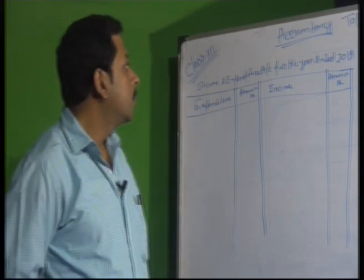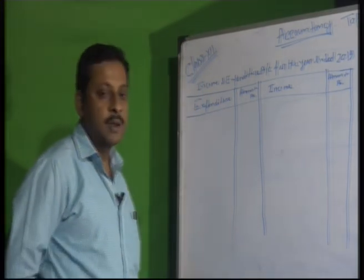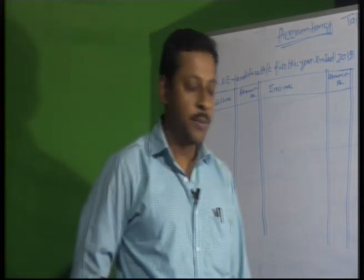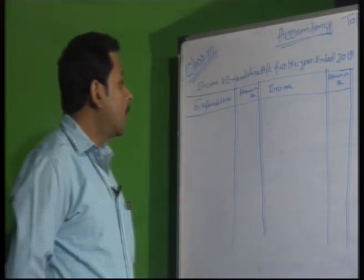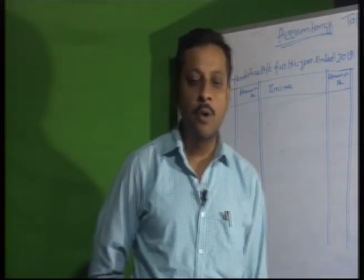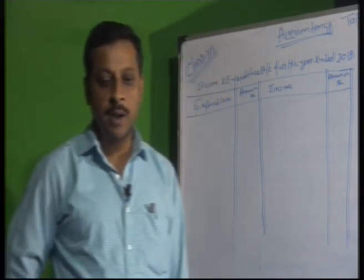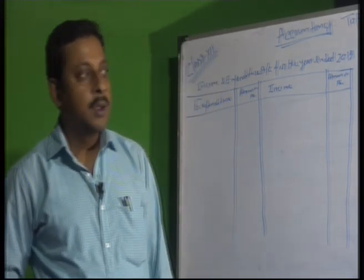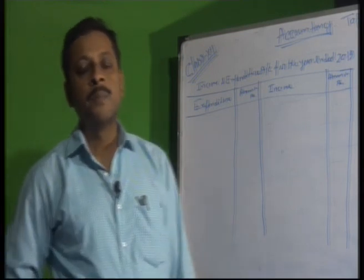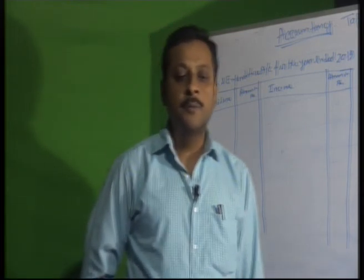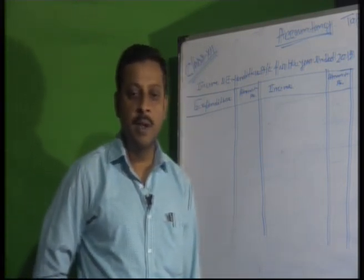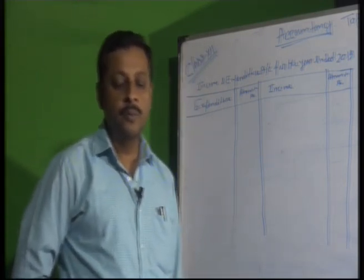So what type of adjustment comes in NPO? We have already done some adjustments in class 10 or 11 in commercial final accounts. In commercial final accounts we see prepaid expenses, outstanding expenses, and depreciation — here also we do the same things.